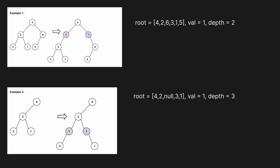Let's look at two basic examples. Given this tree on the left, we're told to insert the value one at depth two. Since the root is depth one, depth two is the next level. So we insert ones in place of the two and six nodes. The left subtree of the new inserted one holds the rest of that original subtree — two, three, one — and the right subtree continues with six and five.